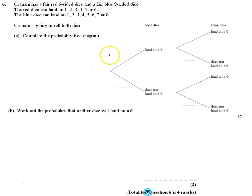We need to complete the probability tree diagram. The probability the red dice lands on a six is one-sixth, since there's only one six on the red dice. So the probability it doesn't land on a six is five-sixths.